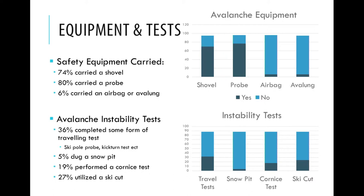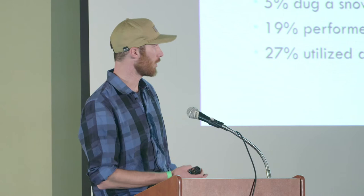Looking at what equipment people carry: only 75% of survey participants were carrying a shovel, and 80% were carrying a probe. In order to ride the lift to access this area you have to go through a beacon checker, so we assume 100% have beacons. But it's alarming that 25% of our population don't have the equipment necessary to rescue their partners. As far as their own field observations, 36% are doing some kind of traveling test. Very few people are doing snow pits — which for our more continental snowpack area seems like a pretty low number.